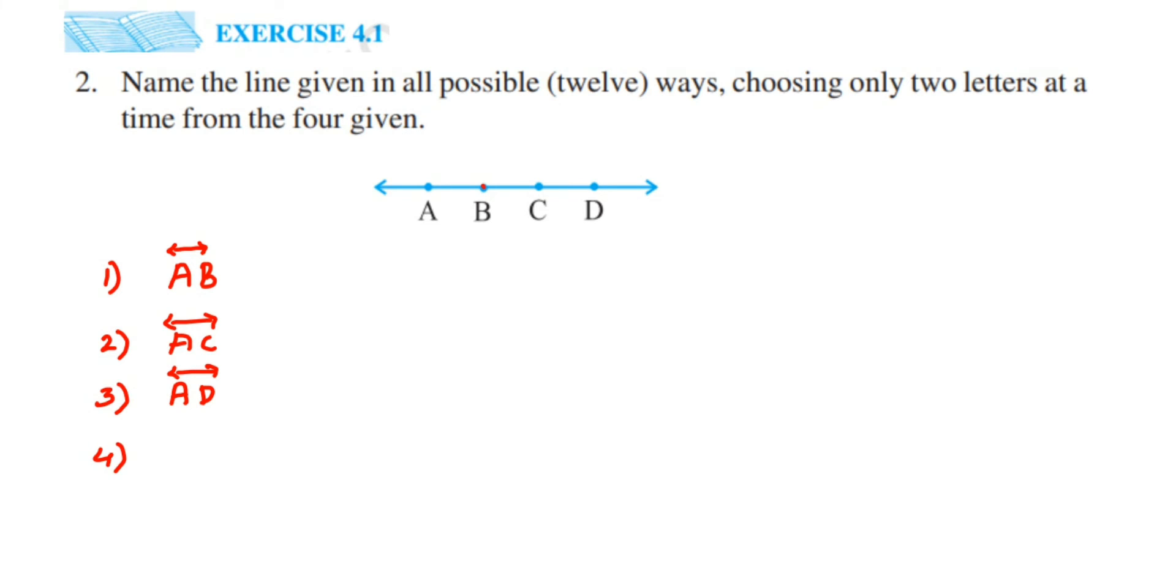Now let's start with B. Suppose B is the starting point. We can write it as BA, right? So it will be BA. Next it will be BC. And next it will be BD. Now I have done with all the combinations of B.